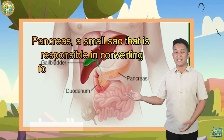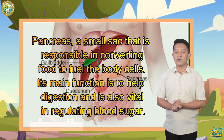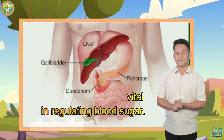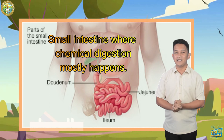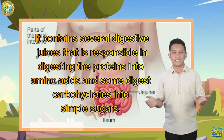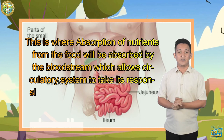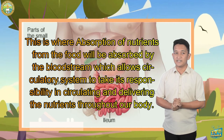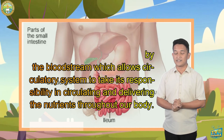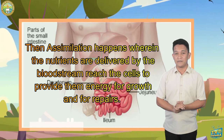Another organ is the pancreas — a small sac responsible for converting food to fuel the body's cells. Its main function is to help digestion and regulate blood sugar. Next is the small intestine, where chemical digestion mostly happens. It contains several digestive juices that digest proteins into amino acids and carbohydrates into simple sugars. This is also where absorption of nutrients from food occurs — absorbed by the bloodstream, allowing the circulatory system to circulate and deliver nutrients throughout the body. Then assimilation happens, wherein nutrients delivered by the bloodstream reach the cells to provide energy for growth and repair.